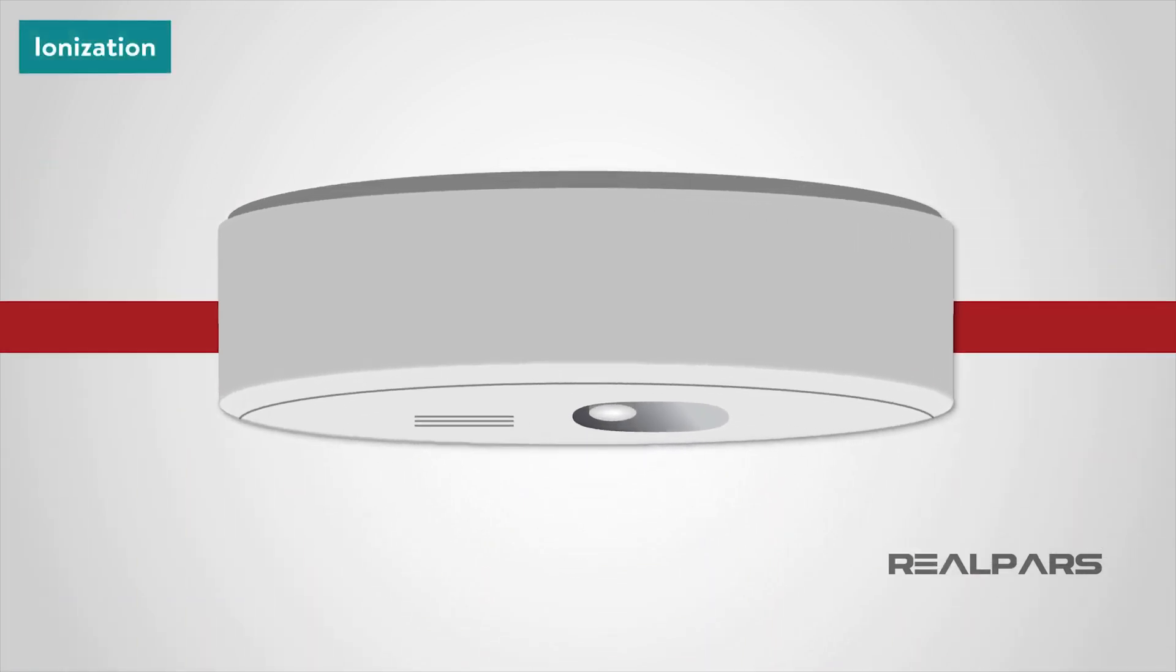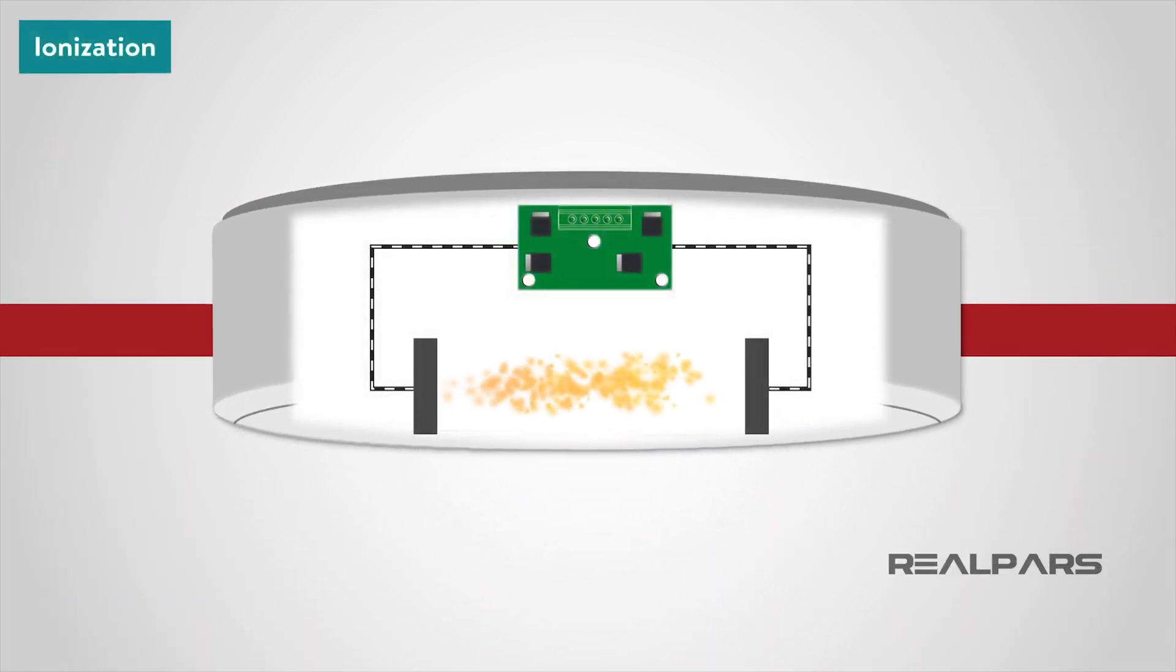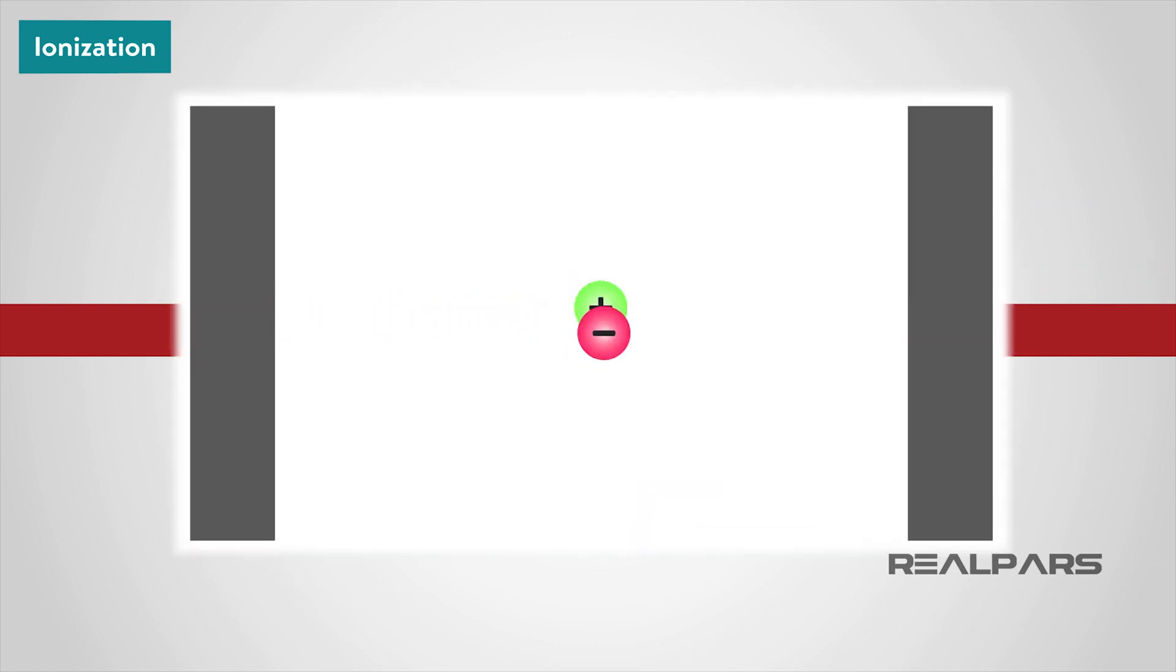An ionization smoke detector generally contains two chambers. The first is used as a reference to compensate for changes in ambient temperature, humidity, or pressure. The second chamber contains a radioactive source, usually alpha particle, which ionizes the air passing through the chamber where current flows between two electrodes.